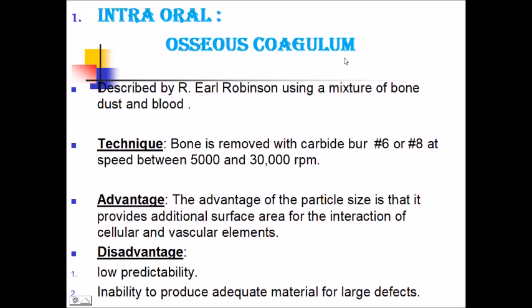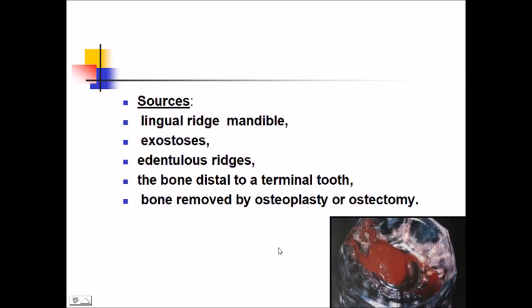Osseous coagulum was first described by Earl Robinson. Technique: bone is removed with a carbide bur at a speed of 5,000 to 30,000 RPM. The small particle size provides additional surface area for interaction of cellular and vascular elements. Disadvantages: low predictability and inability to produce adequate material for larger defects. Sources: lingual ridge of mandible, exostosis, edentulous ridge, bone distal to terminal tooth, and bone removed by osteoplasty or ostectomy.